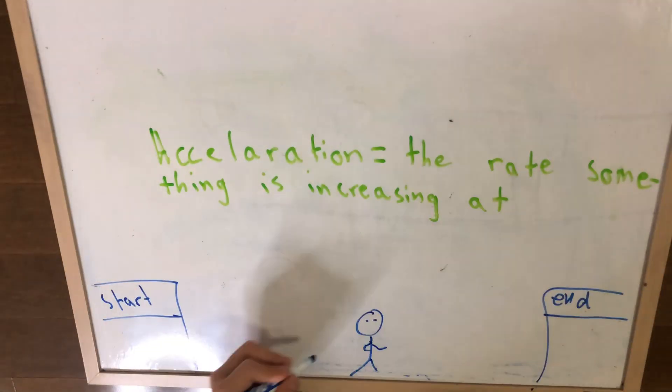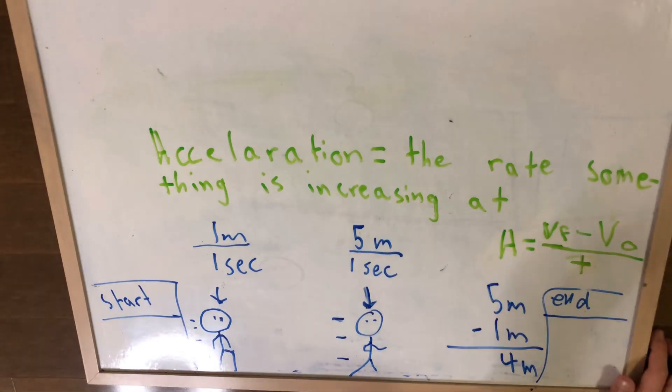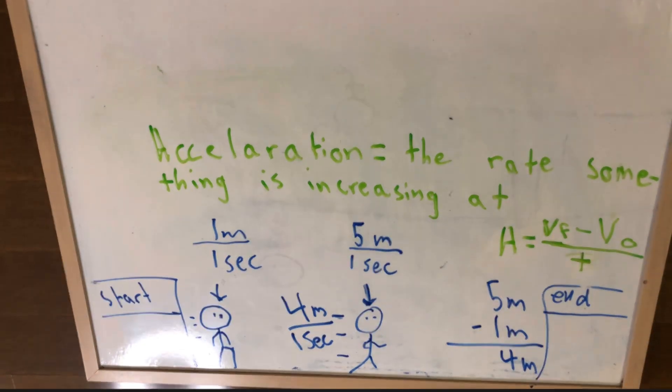Now, another aspect of velocity is called acceleration. Acceleration is the rate that something is increasing at. The formula for acceleration is final velocity minus initial velocity over time.